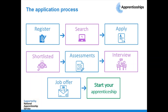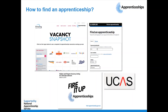Once that has occurred, you will go through the interview process. Hopefully you are then going to get an offer, after which you can start your apprenticeship. We're going to take a step back and look at how we actually find apprenticeships. This is relevant for all levels of apprenticeship, whether that be level two, level three, or higher and degree level apprenticeships.